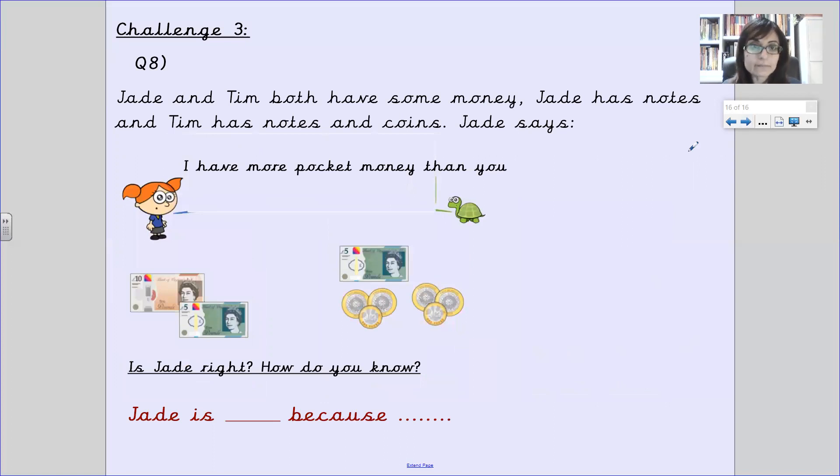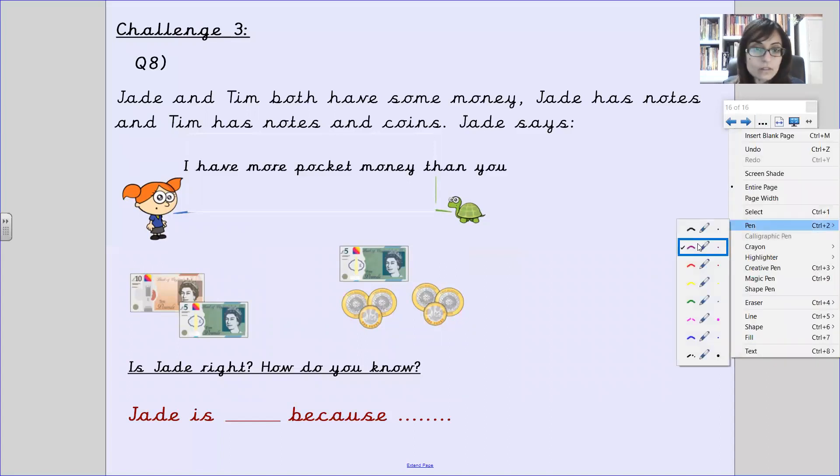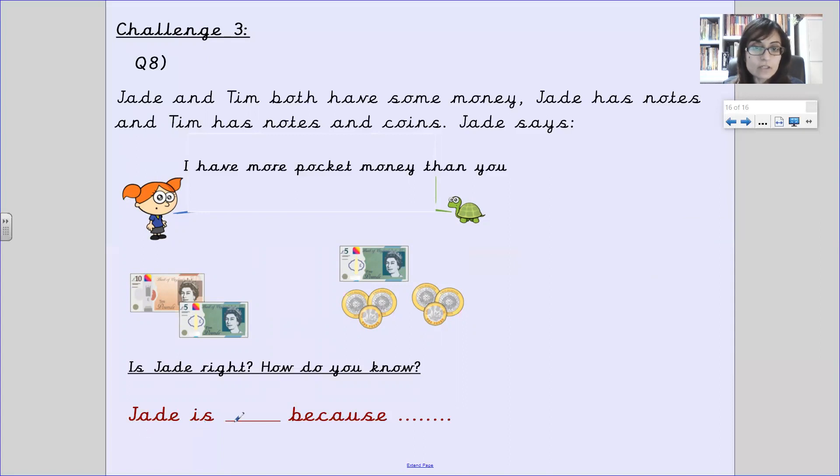Challenge three. Jade and Tim both have some money. Jade has notes and Tim has notes and coins. Jade says, I have more pocket money than you. Is Jade right? And how do you know? So, I want you to use the stem sentence at the bottom. Jade is right because and explain why. Or Jade is wrong and explain why. This is all of Jade's money. This money belongs to Jade, which means these coins and this note belong to Turtle Tim.